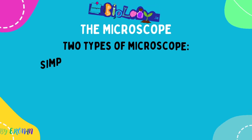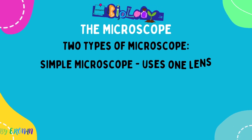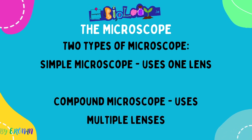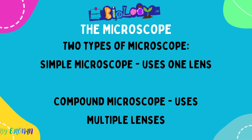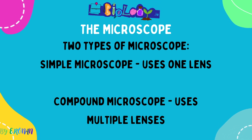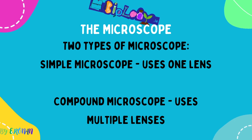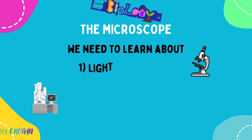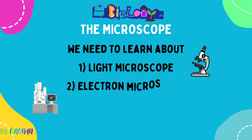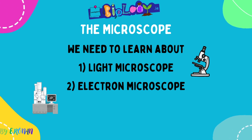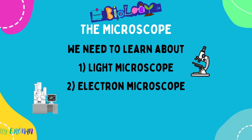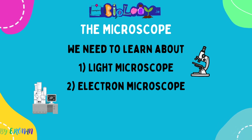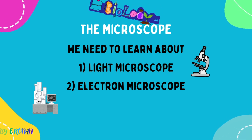There are two types of microscopes. A simple microscope uses only one lens, and a compound microscope uses multiple lenses — those are the ones we use in the school lab. The microscope used in school is a light microscope. However, we also need to learn about the electron microscope, which is used to view cells in high resolution. Electron microscopes cost quite a lot of money, which is why we use the light microscope in schools — they're cheap, easy to use, and we don't need to see the inside of a cell in great detail.